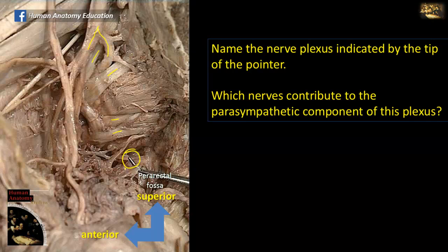There are two plexuses, one on each side, and this is the inferior hypogastric plexus. The plexus is an autonomic plexus made of sympathetic and parasympathetic nerve fibers. The parasympathetic component of this plexus is contributed by branches from the sacral plexus, from S2, 3, and 4, and these constitute the sacral parasympathetic outflow.